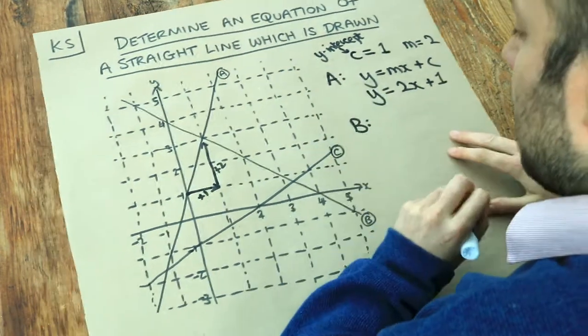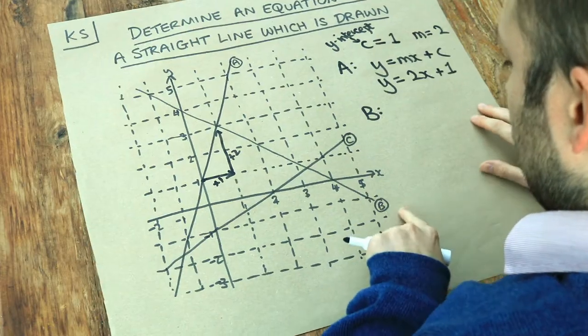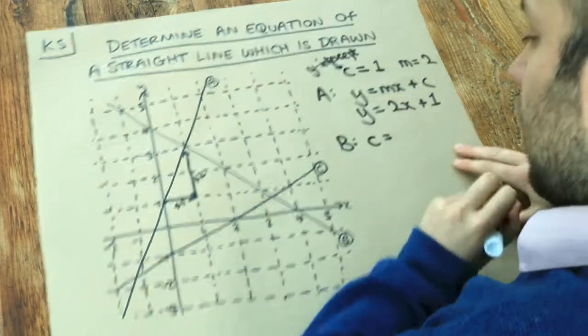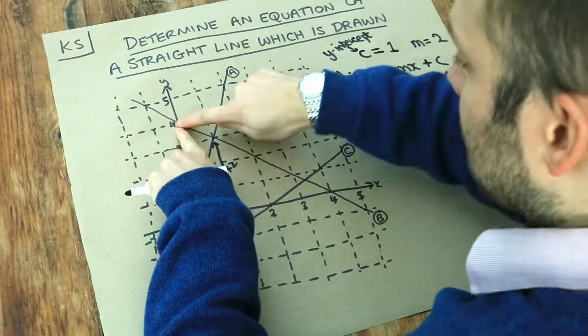Now let's do the next ones more quickly. Line B, well what's the y-intercept? Well the y-intercept C, we can see it cuts the y-axis at 4.